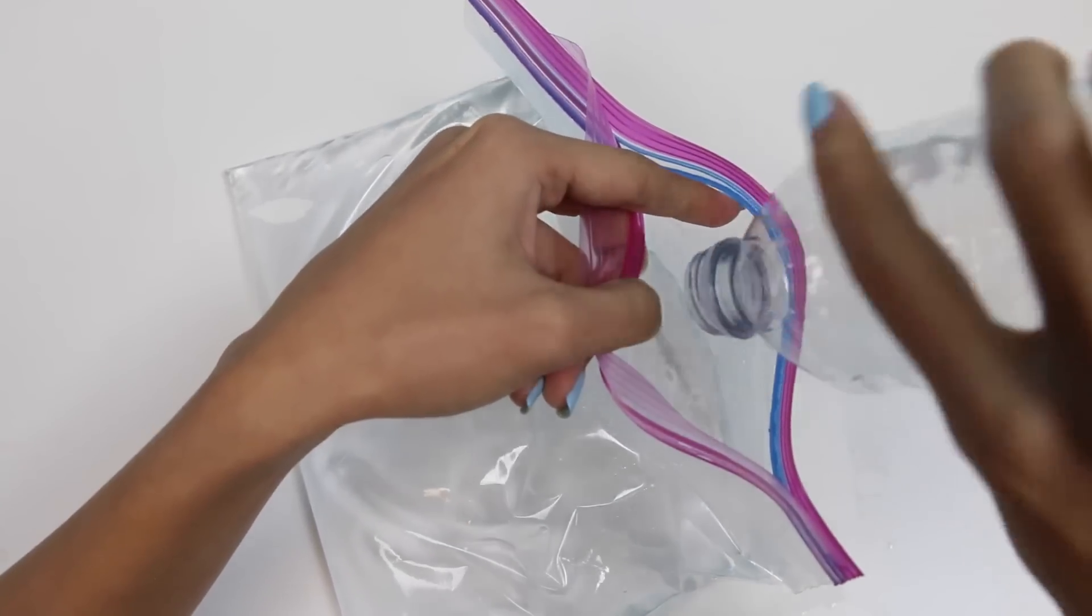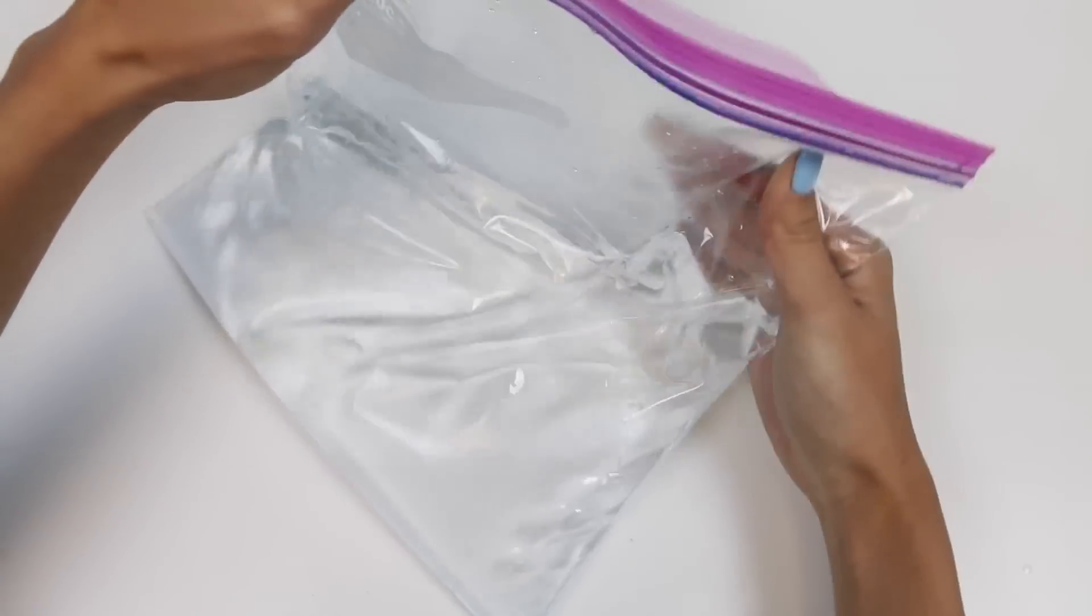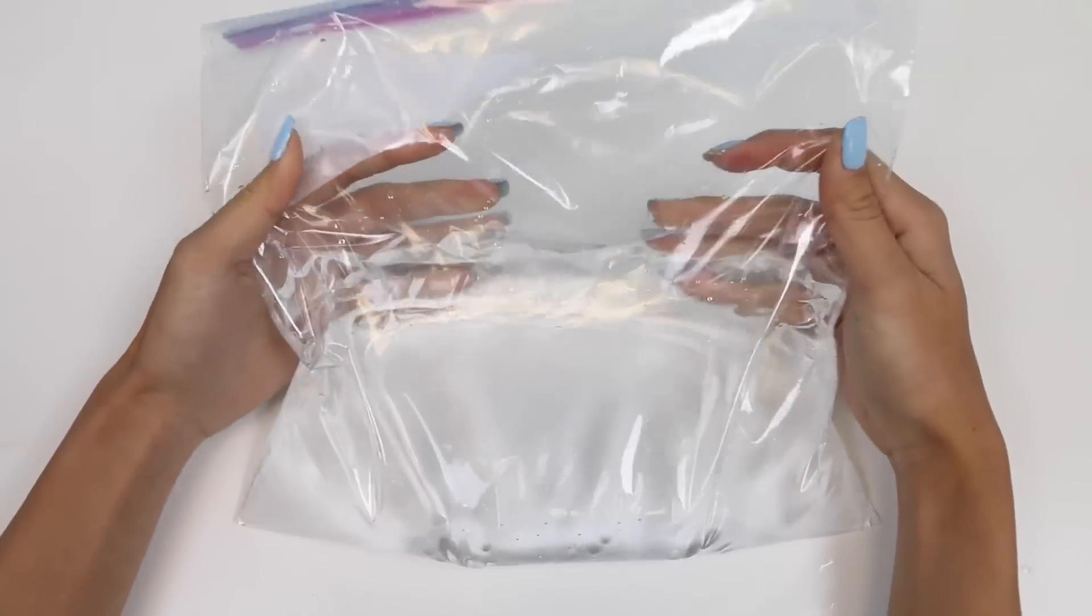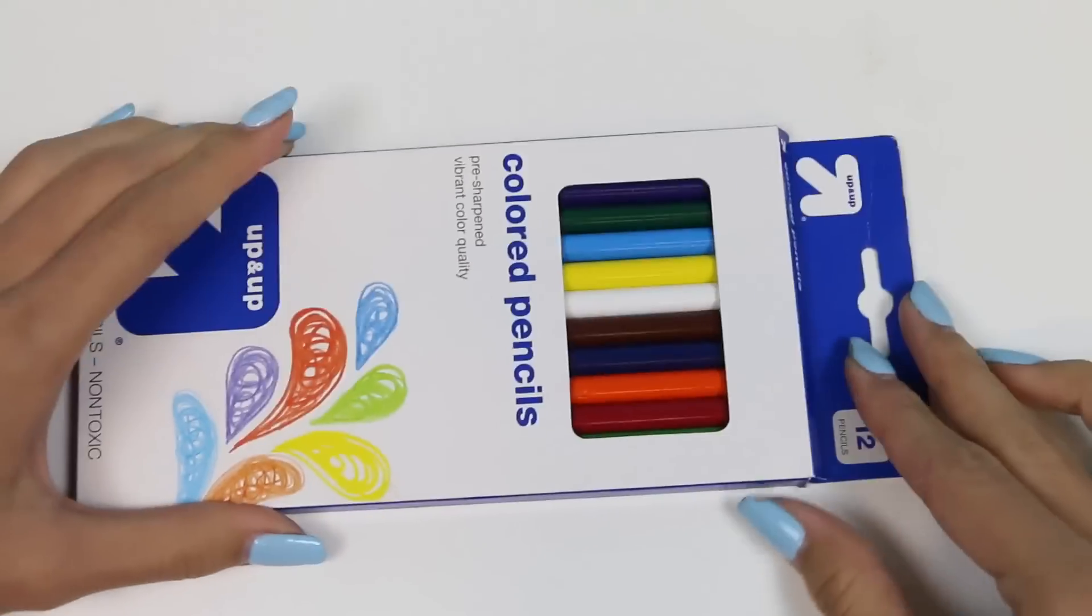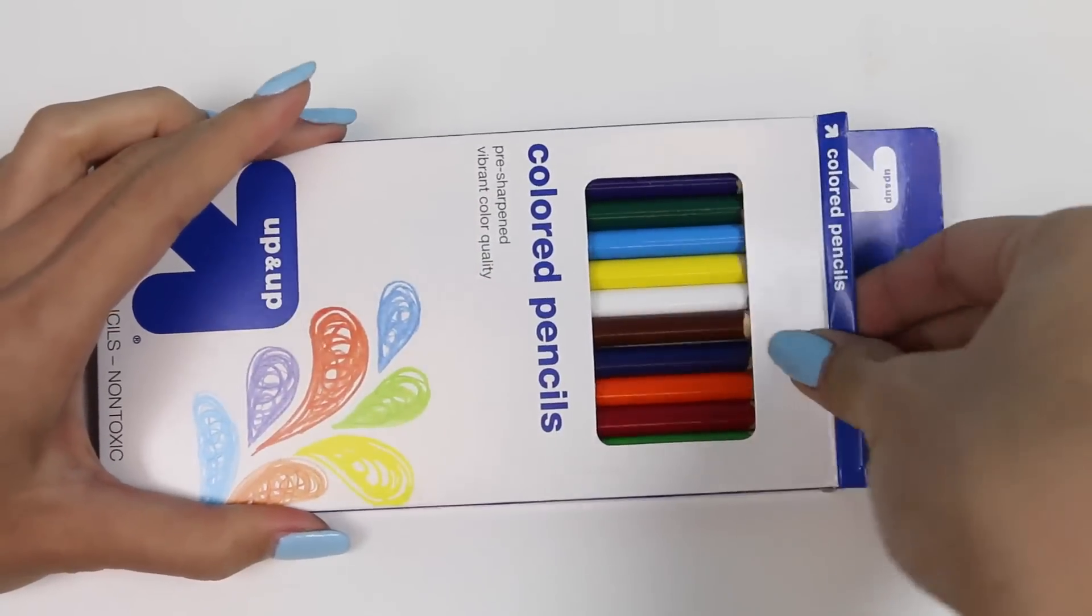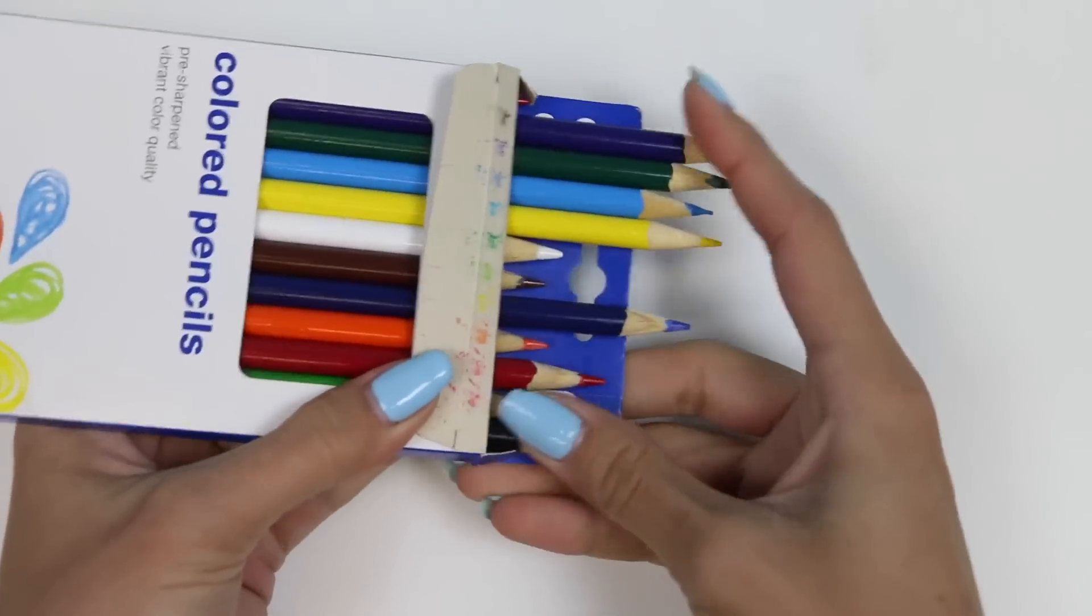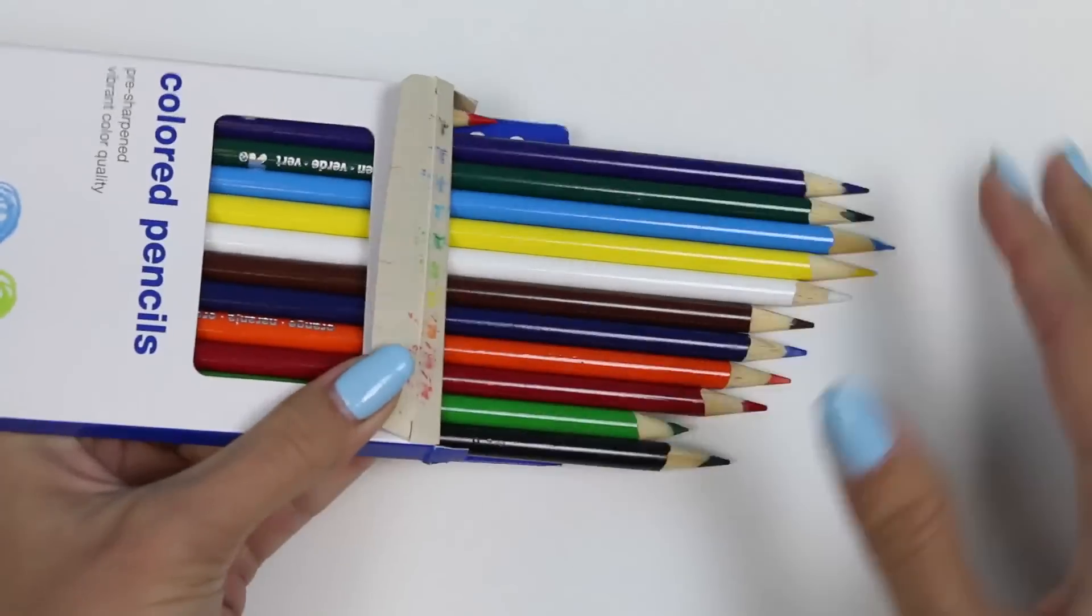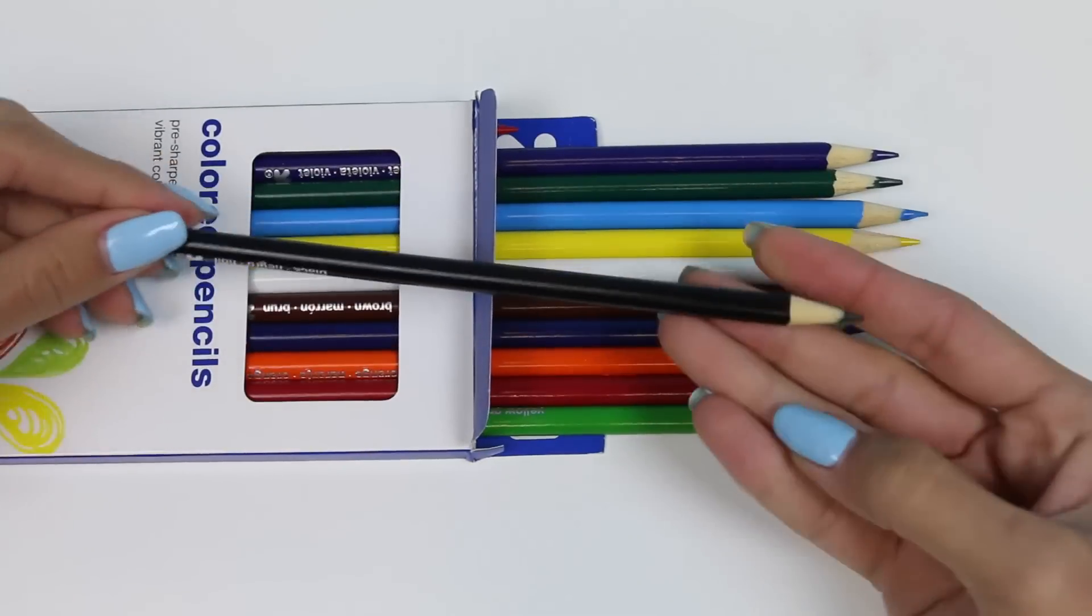You want to fill the bag up about halfway and then zip it up tight. Here I have a box of 12 colored pencils and yep, they're already pre-sharpened. You can also use pens or regular pencils if you want, but I personally like the touch of color.